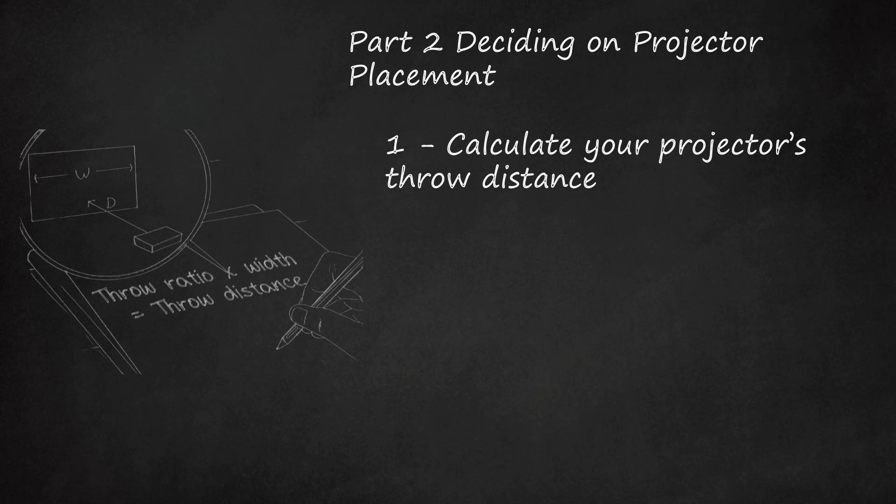If you have a 100-inch screen and a throw ratio range of 1.4:1 to 2.8:1, you can position your projector anywhere between 140 and 280 inches (355.6 and 711.2 centimeters, or 11.67 and 23.33 feet). The calculation looks like this, using the 1.4:1 ratio as an example: 1.4 × 100 inches = 140 inches.